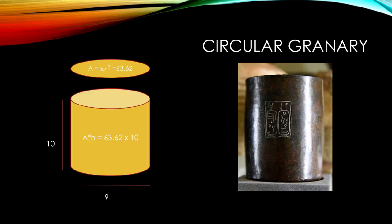Now all we have to do is multiply the area by the height. The height of the cylinder is 10. So basically the volume of the cylinder is 636. That's the modern solution.